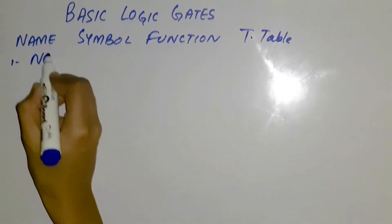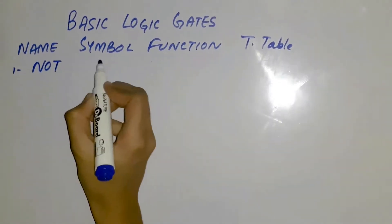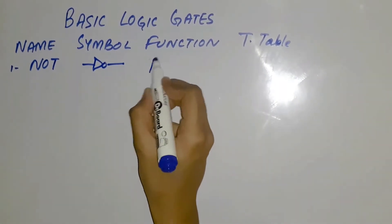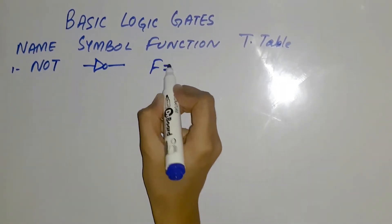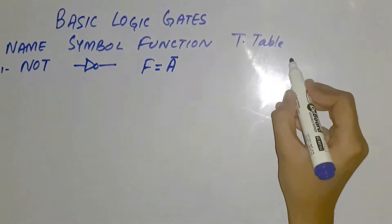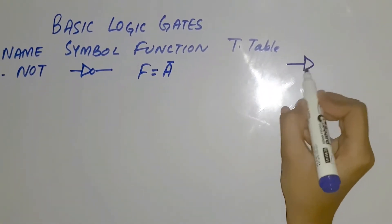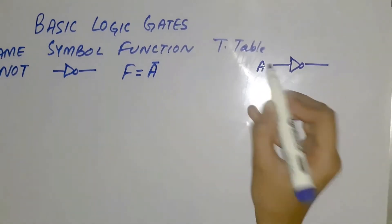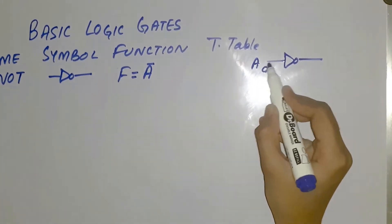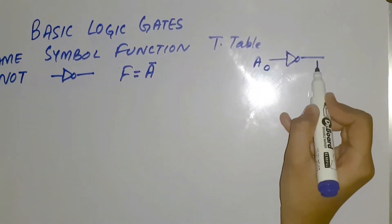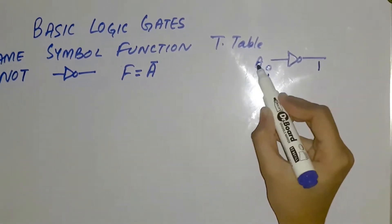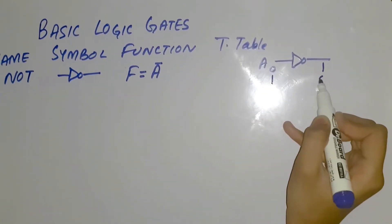First of all, we have the NOT gate. It is represented by this symbol and its function is represented by f equals a bar. If we pass a through the inverter and a has value 0, after passing through the inverter its value will become 1, and if a has value 1, after passing through the inverter its value will become 0.